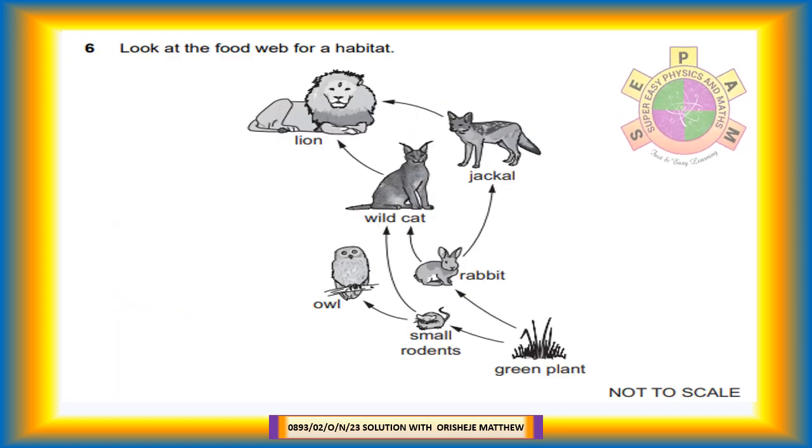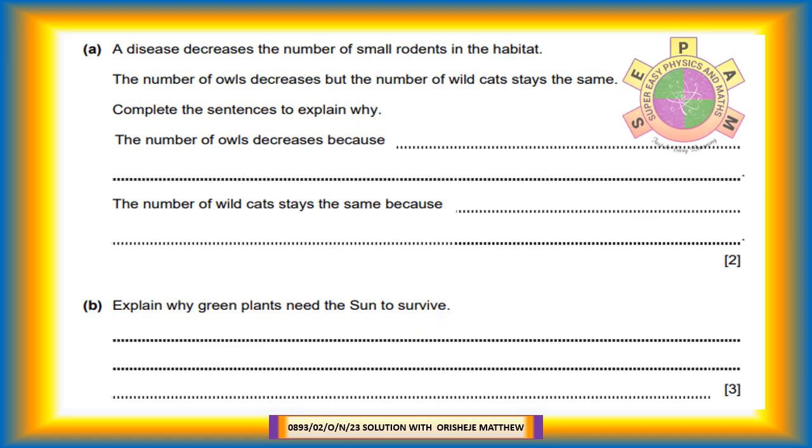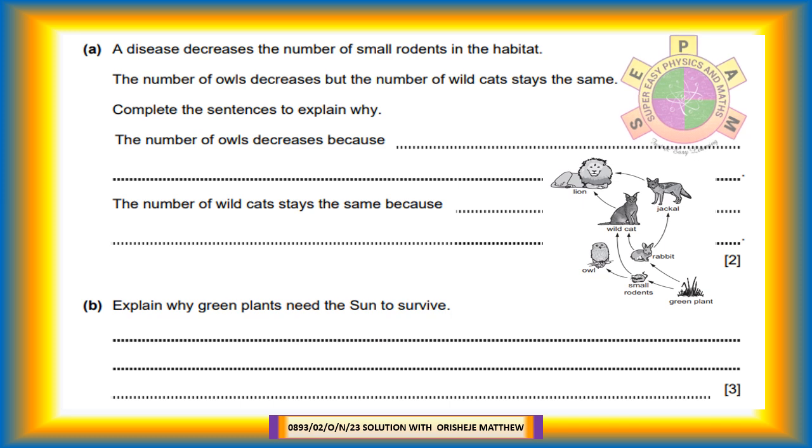Question 6. Look at the food web for a habitat. Small rodent feeds on green plant. Owl feeds only on small rodent. Rabbit feeds on green plant. Wildcat feeds on small rodents and rabbits. Jackal feeds only on rabbits. Lion feeds on wildcat and jackal. A disease decreases the number of small rodents in the habitat. The number of owls decreases but the number of wildcats stays the same. Complete the sentences to explain why. The number of owls decreases because they only feed on small rodents. The number of wildcats stays the same because wildcats will eat more rabbits.